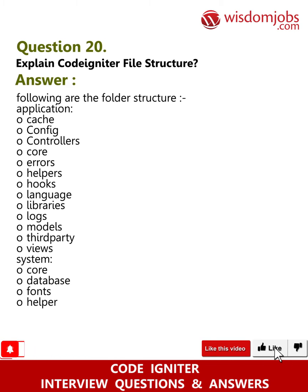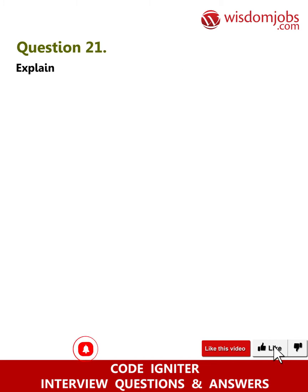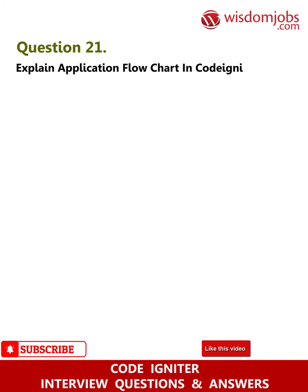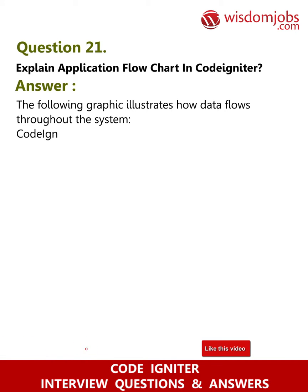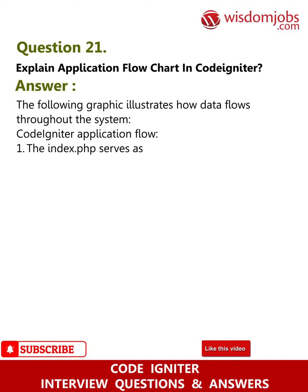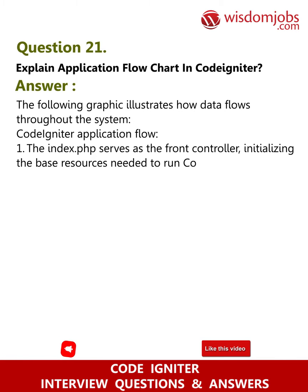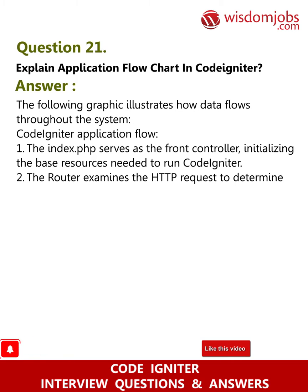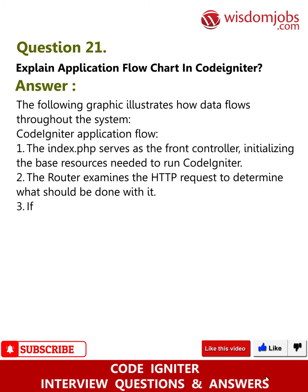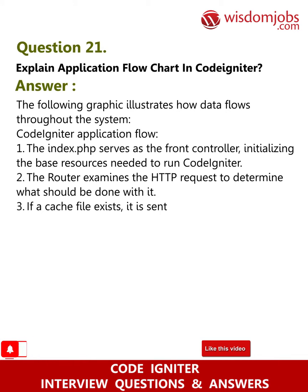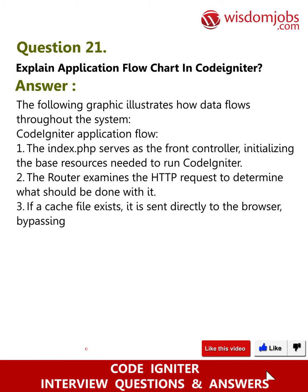Question 21: Explain application flowchart in CodeIgniter. Answer: The following describes how data flows throughout the system. One: index.php serves as the front controller, initializing the base resources needed to run CodeIgniter. Two: the router examines the HTTP request to determine what should be done with it. Three: if a cache file exists, it is sent directly to the browser, bypassing the normal system execution.